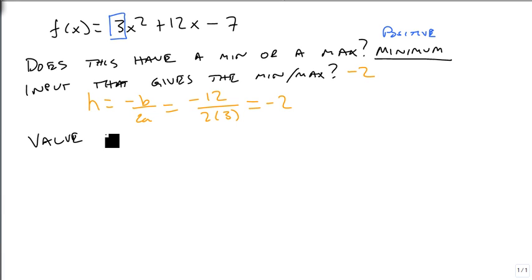The value of the minimum is k. And k is f(h), which is -2. So we get 3 times (-2)² plus 12 times -2, minus 7.